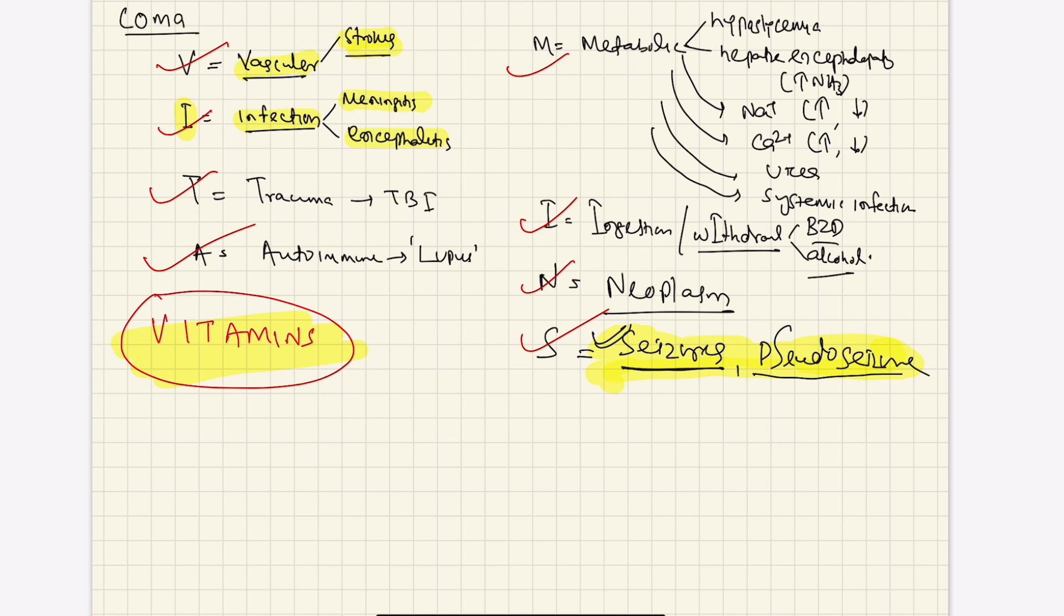T for trauma that can produce traumatic brain injury and coma. A for autoimmune diseases - especially if she is a woman suffering from SLE for a long time, they can have lupus encephalitis.